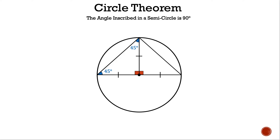The base angles of the left triangle are 45 degrees, because 45 + 45 + 90 = 180 degrees. The right triangle on the right side is also isosceles — its two base angles are also 45 degrees, because 45 + 45 = 90 degrees. So our inscribed angle is 45 + 45 = 90 degrees.